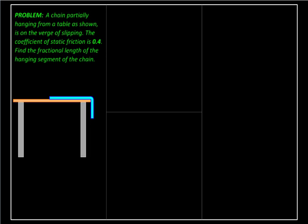We start by defining lengths: let H be the length hanging vertically down, then the remaining length lying horizontally is L minus H, where L is the total length. We analyze these two parts separately — the vertical part exerts a force trying to initiate motion, while the horizontal part experiences friction and resists it.